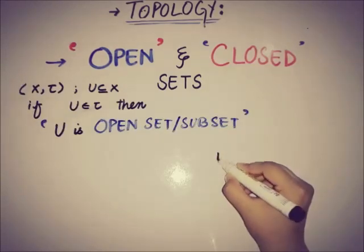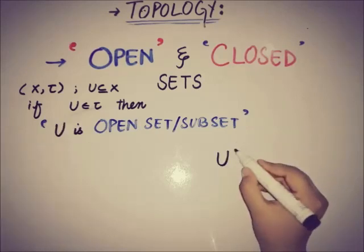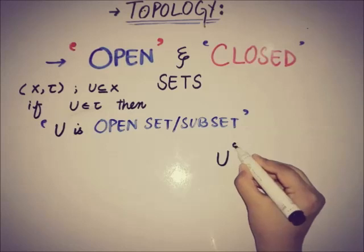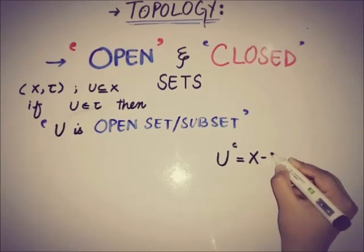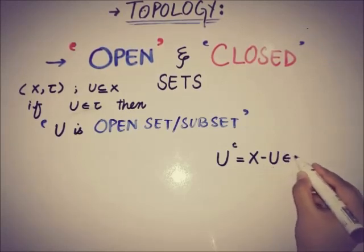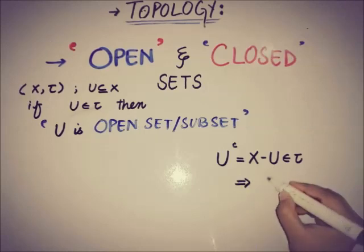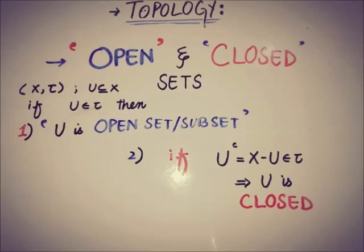But if that subset u of x is not open, then we can check whether it is closed or not. We take the complement of that subset, which means x minus u. When x minus u belongs to the topology, then this implies that u is closed.